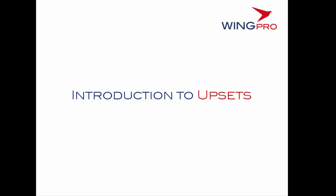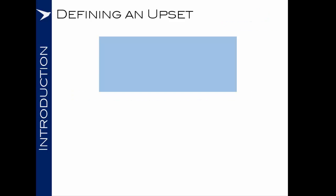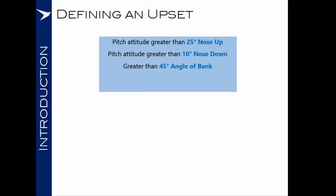So what do we mean by an upset and why is it important to us? Firstly, an upset can be any condition of the airplane which is different to what was commanded or expected at any given time. While specific values may vary among models of airplane, the following unintentional conditions generally describe an aircraft upset: pitch attitude greater than 25 degrees nose up, a pitch attitude greater than 10 degrees nose down, or an angle of bank greater than 45 degrees. However, you could be within the above parameters but at an airspeed which is inappropriate to the conditions.